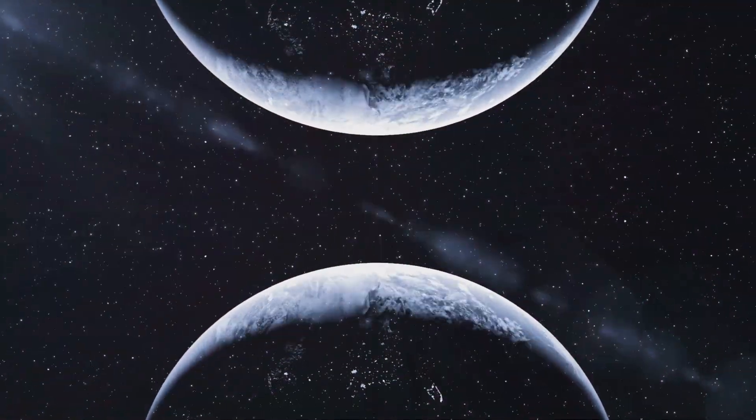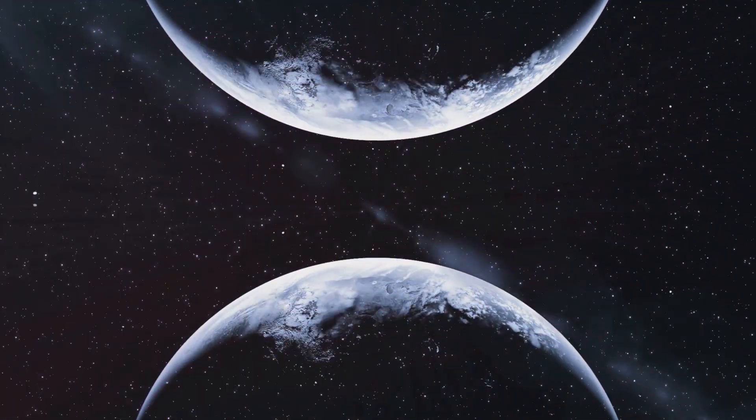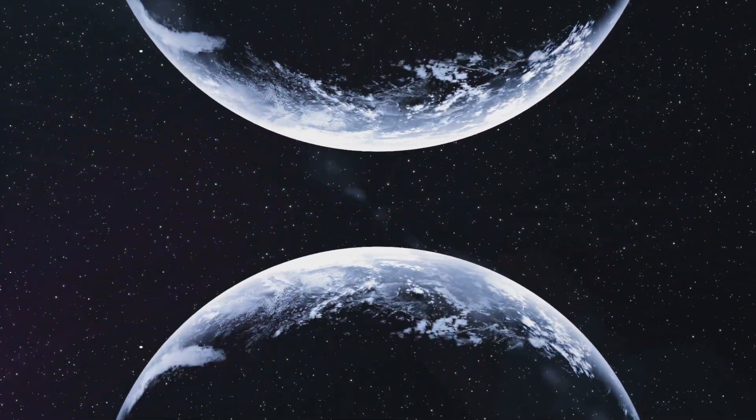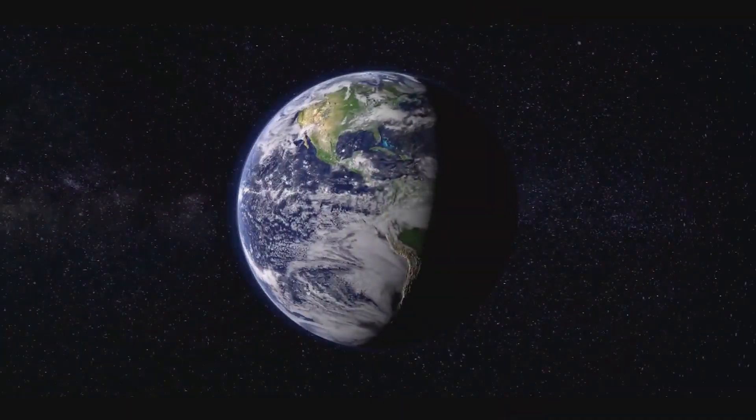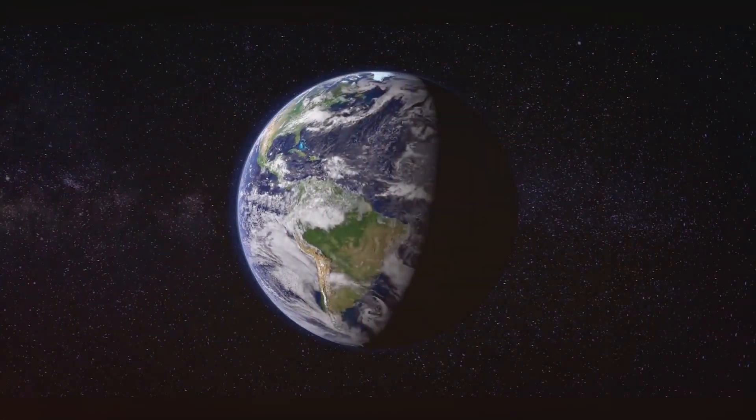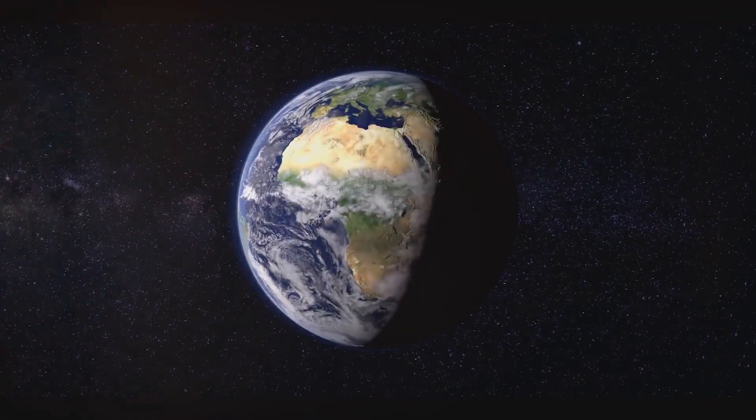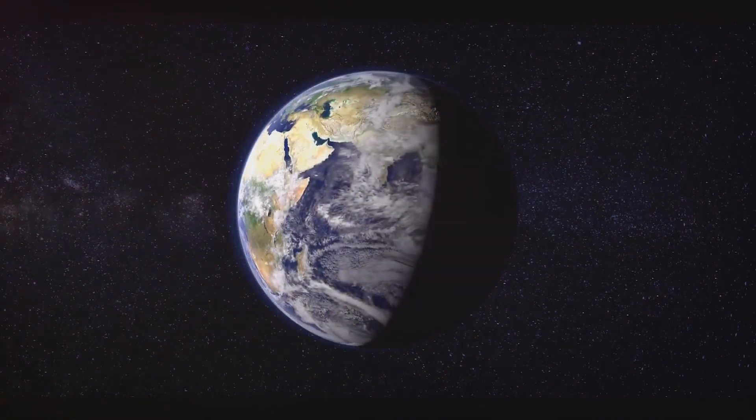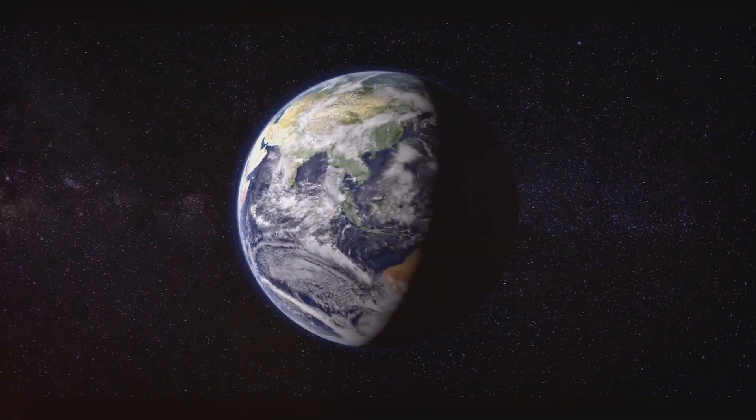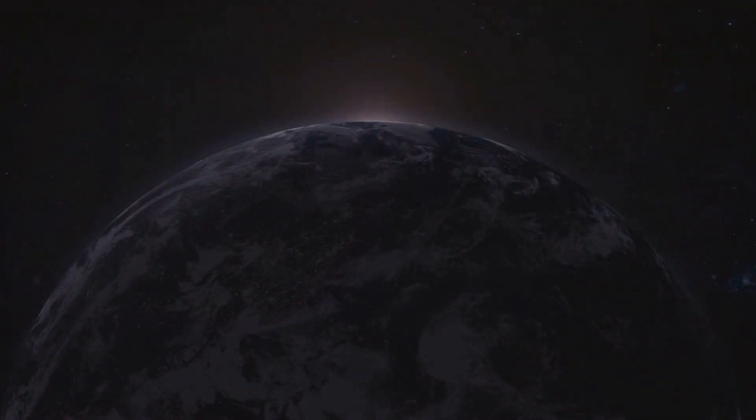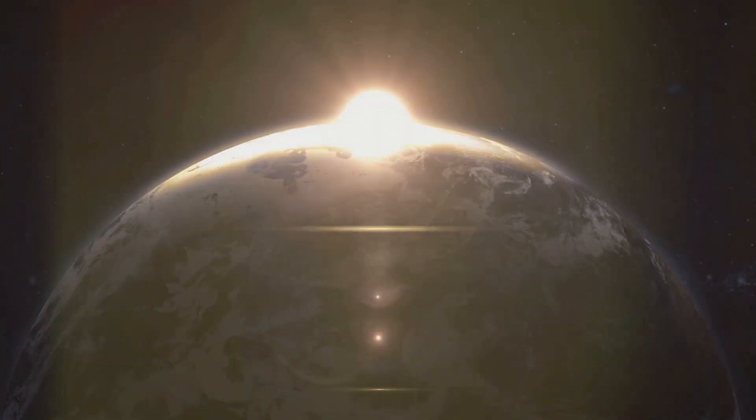This axial tilt, combined with the elliptical orbit, creates the complex and varied climate patterns we observe on Earth. The Earth's gravity also affects the Moon. The Moon is kept in orbit around the Earth by the Earth's gravitational pull. At the same time, the Moon's gravity affects the Earth, causing the tides in our oceans. The gravitational interaction between the Earth and the Moon leads to the rise and fall of sea levels.